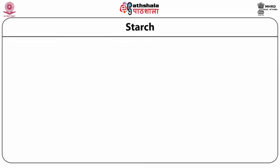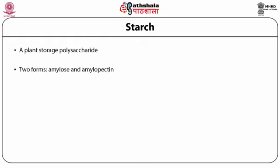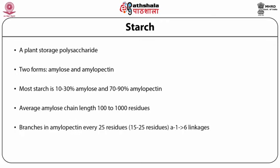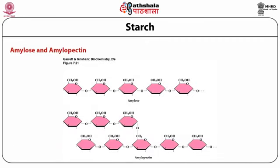Starch is a plant storage polysaccharide with two forms: amylose and amylopectin. Most starch is 10 to 30 percent amylose and 70 to 90 percent amylopectin. Average amylose chain length is 100 to 1000 residues. Amylopectin branches every 25 residues. Amylose has alpha-1,4 linkages and is a straight-chain linear polymer, whereas amylopectin is both linear and branched, making it more complex.